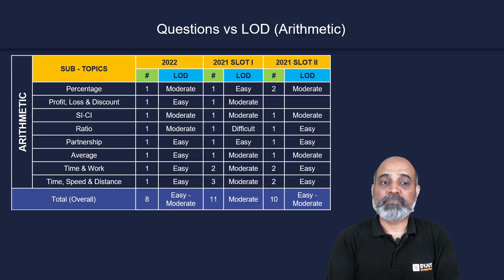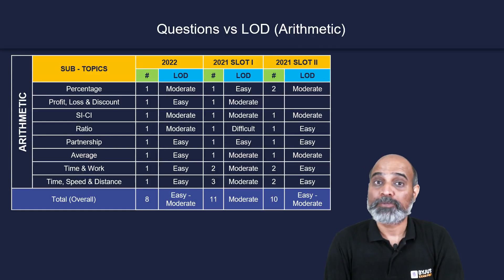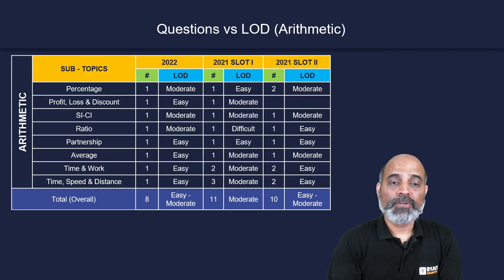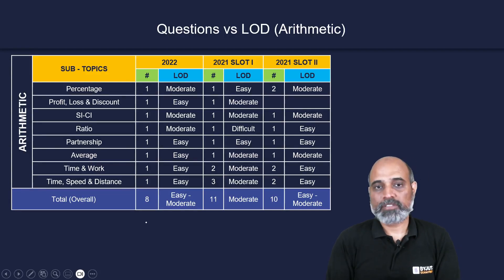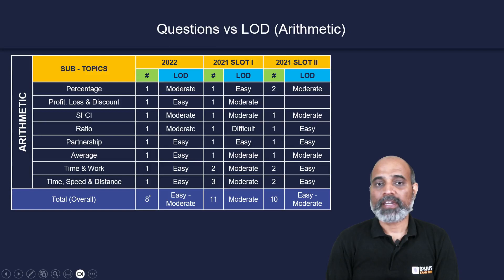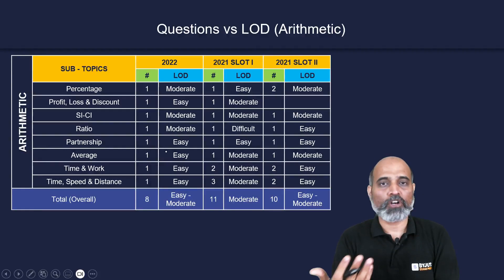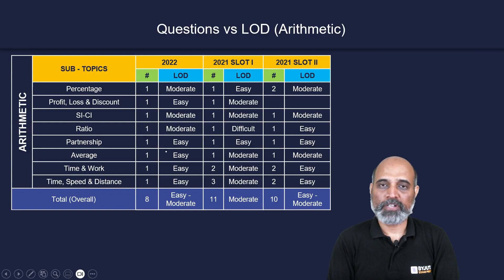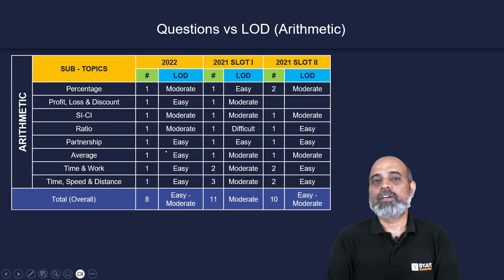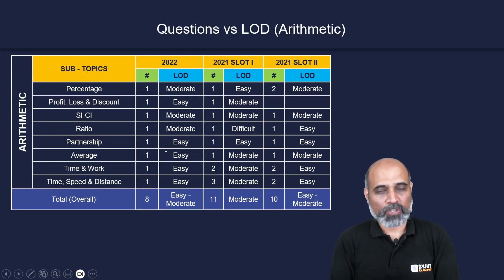The important arithmetic subtopics are percentage, profit/loss and discount, SI/CI, ratio, partnership, average, time and work, and time/speed and distance. In 2022, there was one question from each of these topics — a total of eight arithmetic questions. The difficulty ranged from easy to moderate, with SI/CI and ratio being moderate, percentage slightly moderate, and the remaining questions very easy — solvable within 30 seconds.